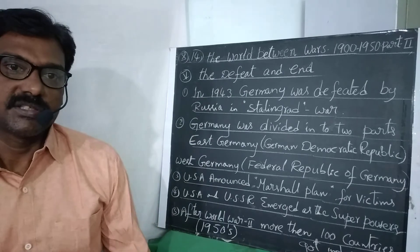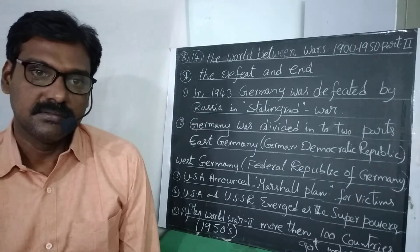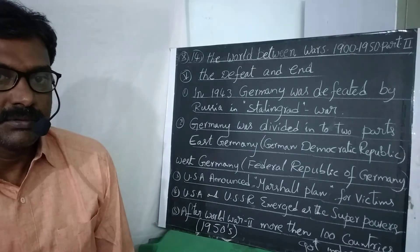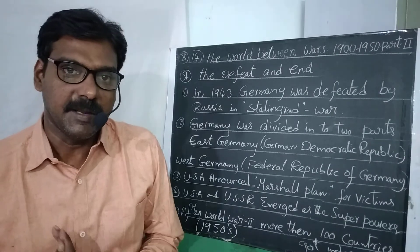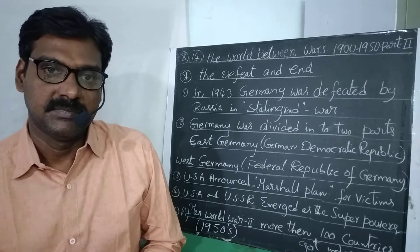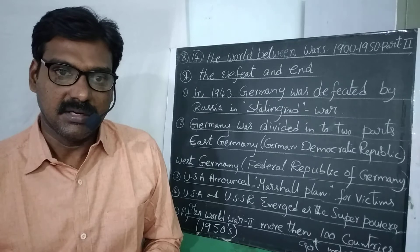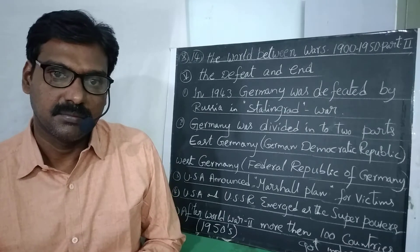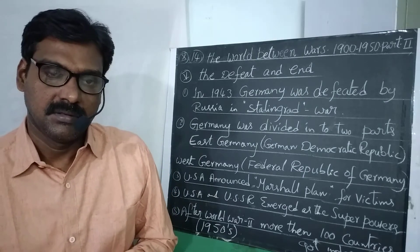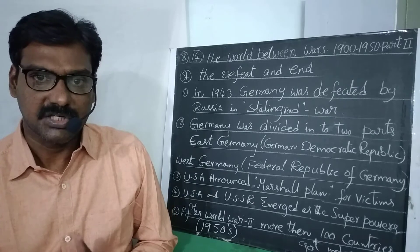World War 2 was started in 1939 and continued. It ended with the defeat of Germany. Initially, Germany won wars against France and England, and Germany occupied many areas of France. Initially, Germany and Japan got victories against England and France, but gradually Germany and Japan were defeated by Russia and America.